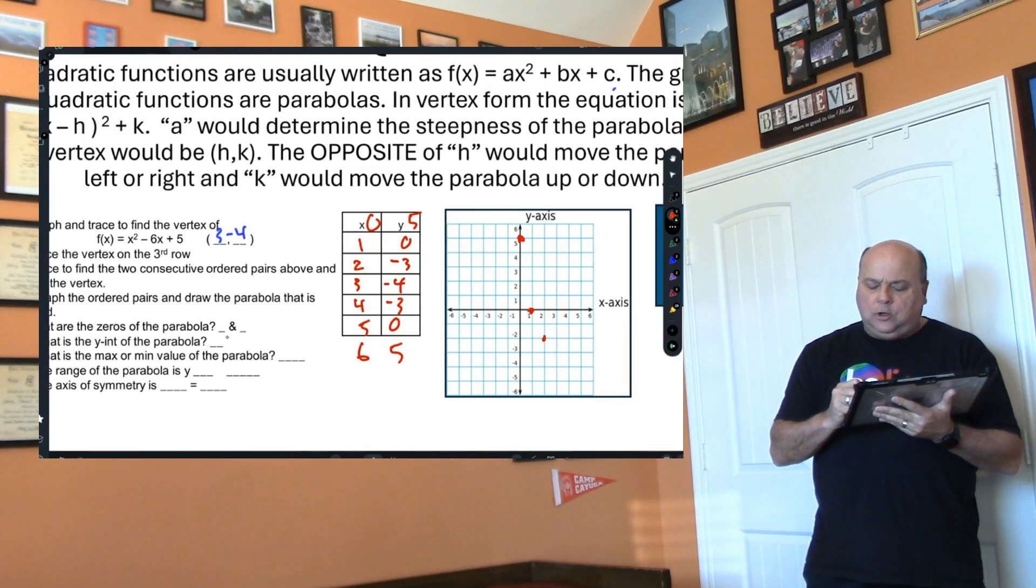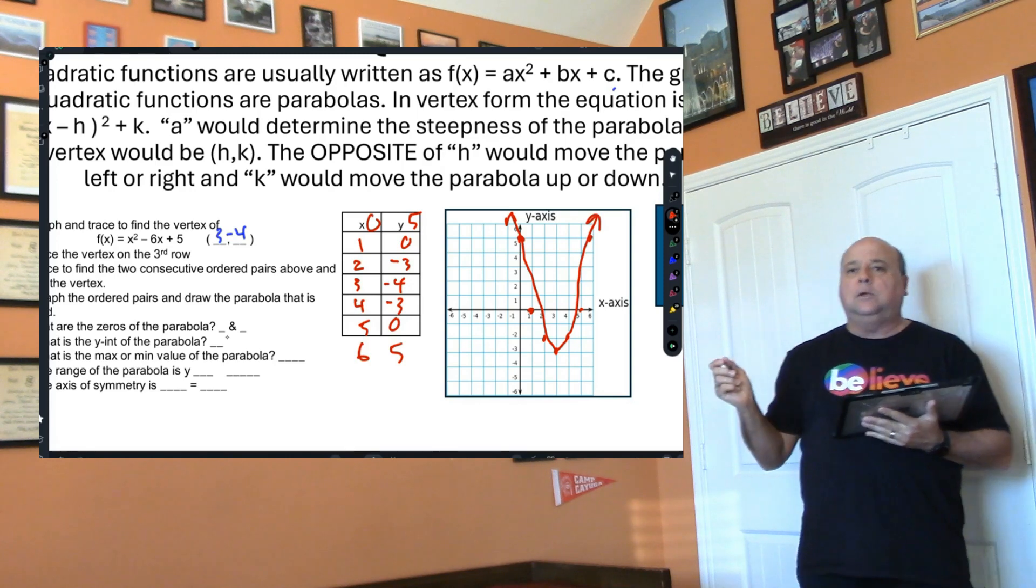We're going to graph (0, 5), (1, 0), (2, -3) and we get this parabola. This is the normal size of a parabola.